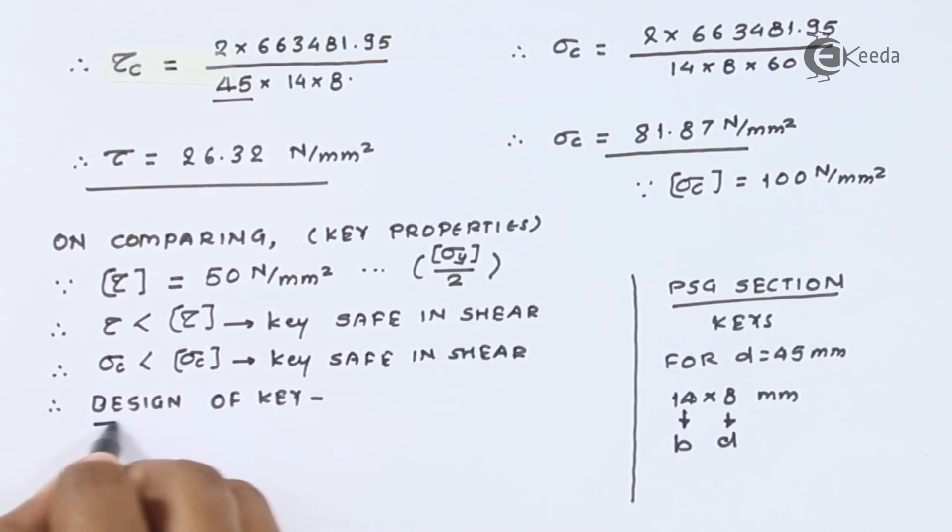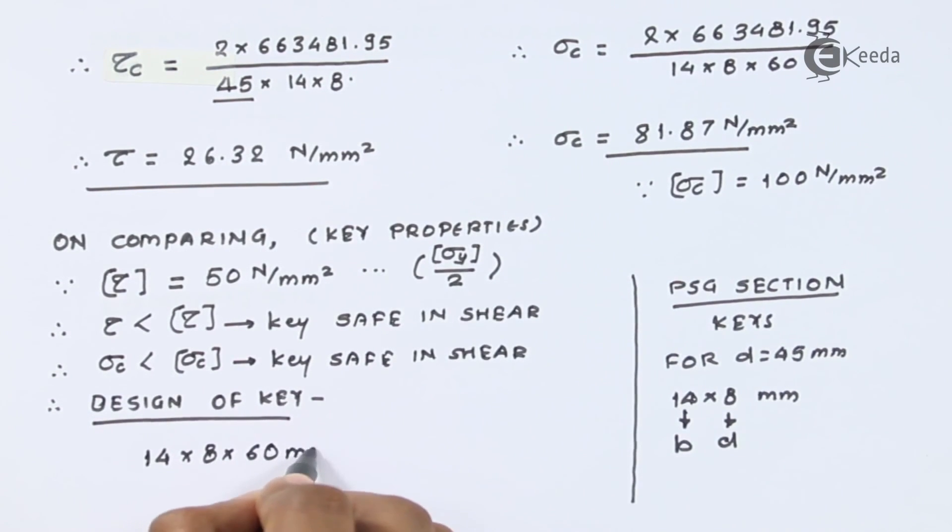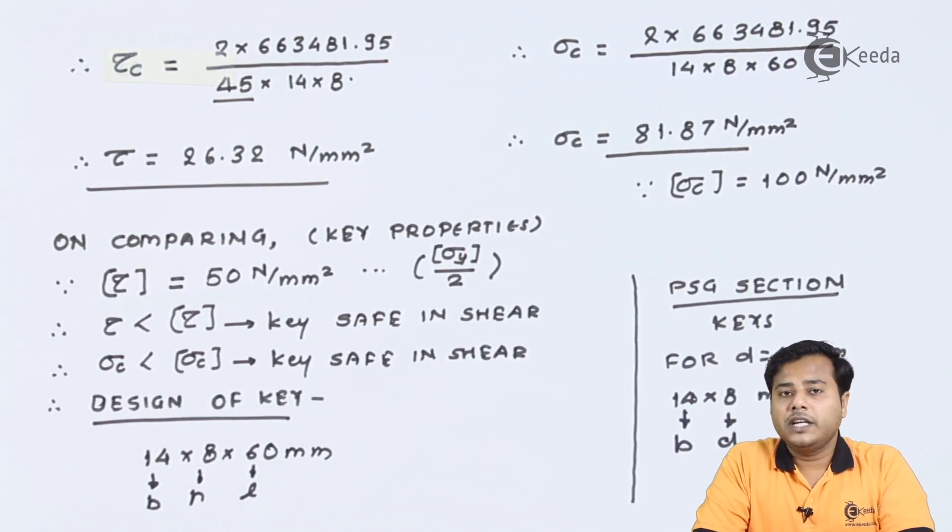Therefore final selection of key is 14 by 8 by 60 millimeter where this is the breadth, height, and the length. So there we end with the selection of the key and the complete problem is solved.